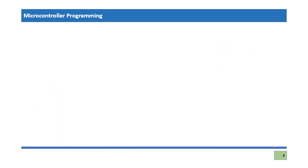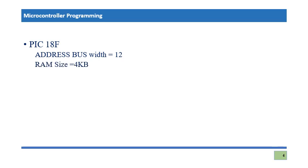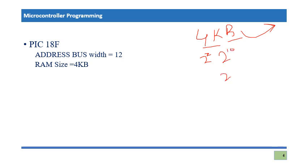Let's apply this knowledge to a specific controller. We are dealing with the PIC18F, which has an address bus of 12 bits and a memory size of 4 kilobytes. If we know the memory size is 4KB, we can calculate the address bus width: 4K is 2 power 10, and 4 is 2 power 2, so in total we have 2 power 12 — meaning the address bus is 12 bits wide.